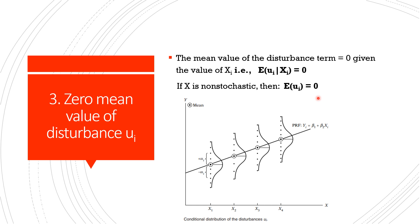Now let's look at this graph. The graph shows each y population corresponding to a given x is distributed around its mean value. So this circle is the mean value around which the values are distributed. Some values are above it and some are below it. These values are nothing but the mui. The positive mui cancel out the negative mui values so that their average or mean effect on y is zero.